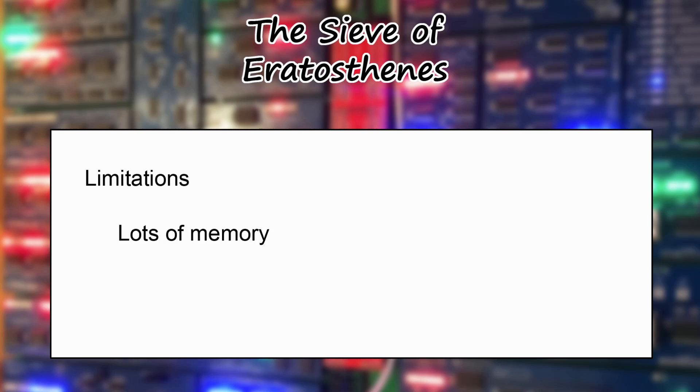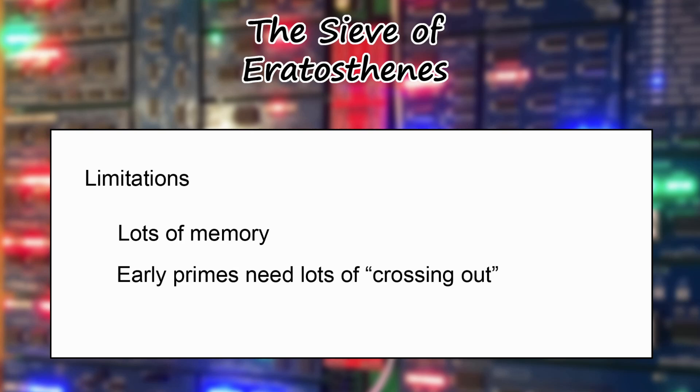First and foremost, this algorithm takes a lot of memory. If we wanted to test for prime numbers up to a million, we'd need a million entries in our table. While simple code examples use bytes or integers per entry, we could use a single bit flag, fitting eight per byte, which reduces memory requirements — but as we increase the numerical range, we'd still need a lot of memory.